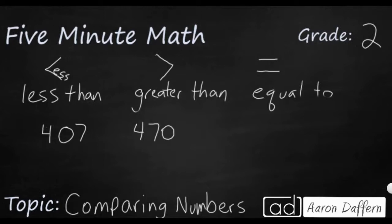Once again, let's go ahead and draw our hundreds, tens, and ones charts. We're going to line these two numbers up vertically, that means one on top of each other. So four, zero, seven - four hundreds, zero tens, seven ones. And then four, seven, zero - four hundreds, seven tens, zero ones.